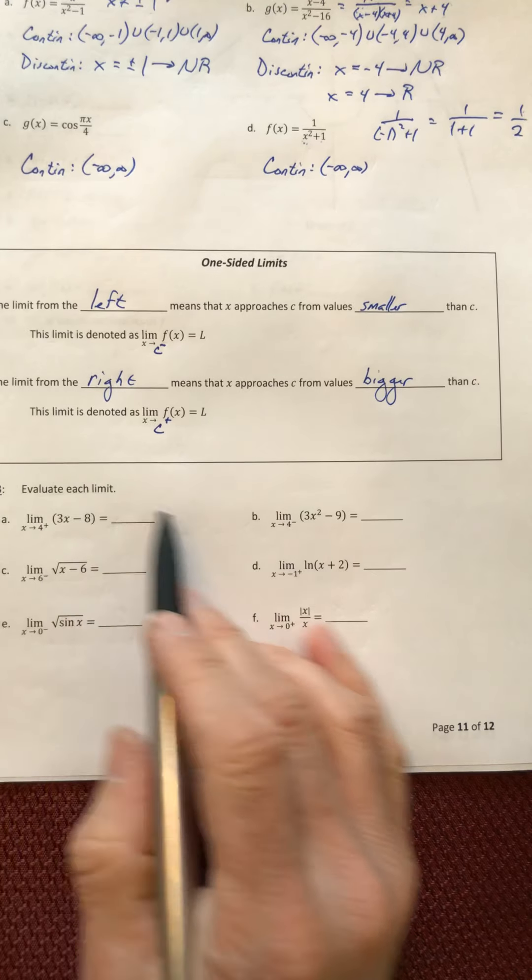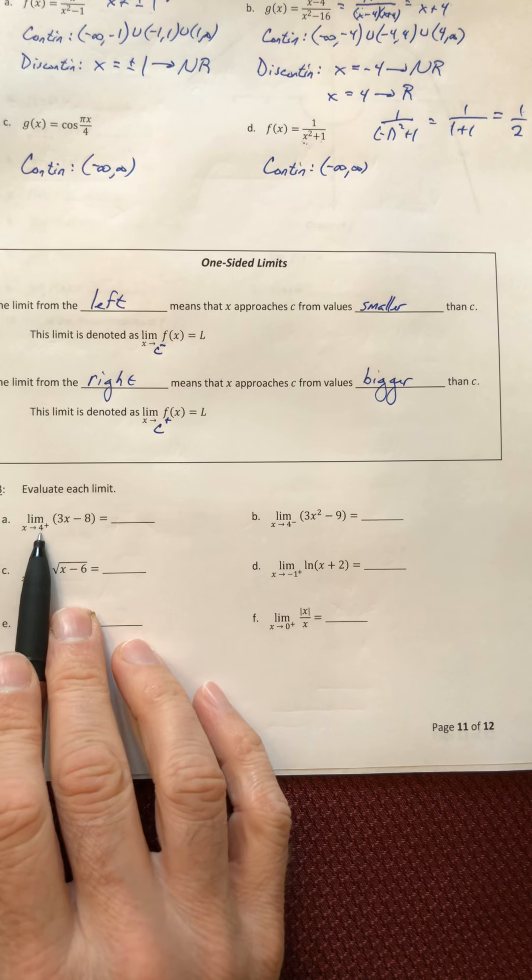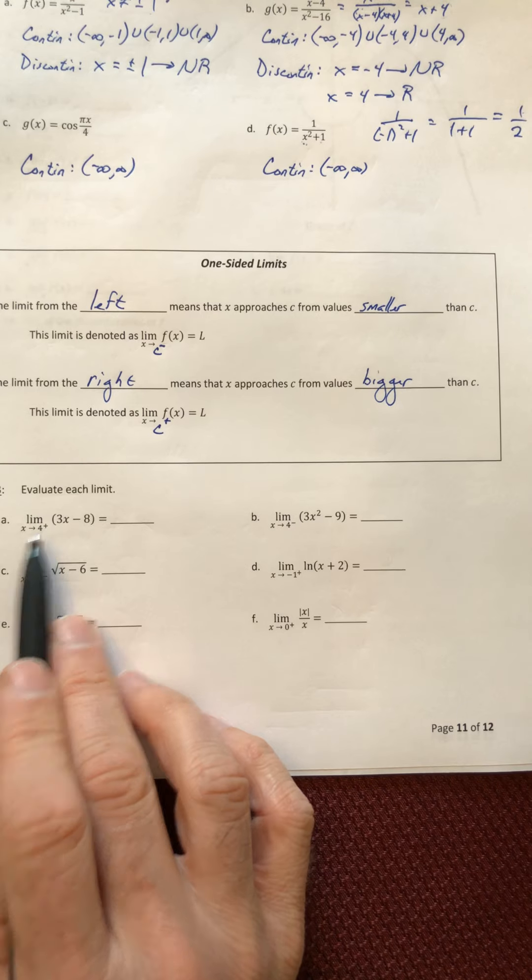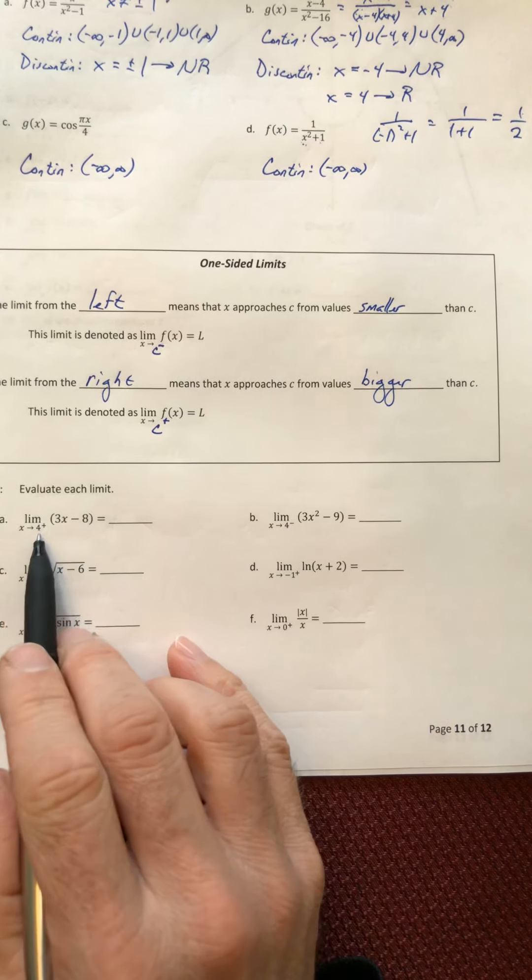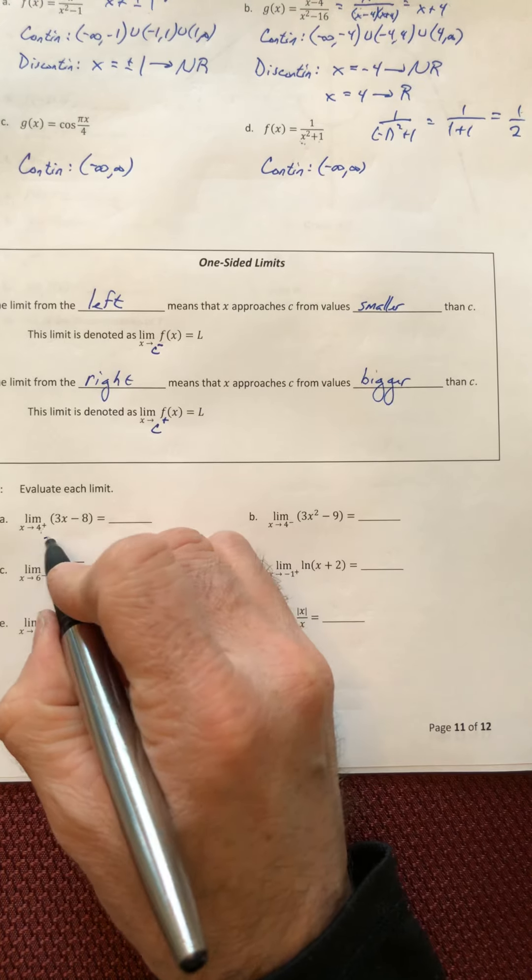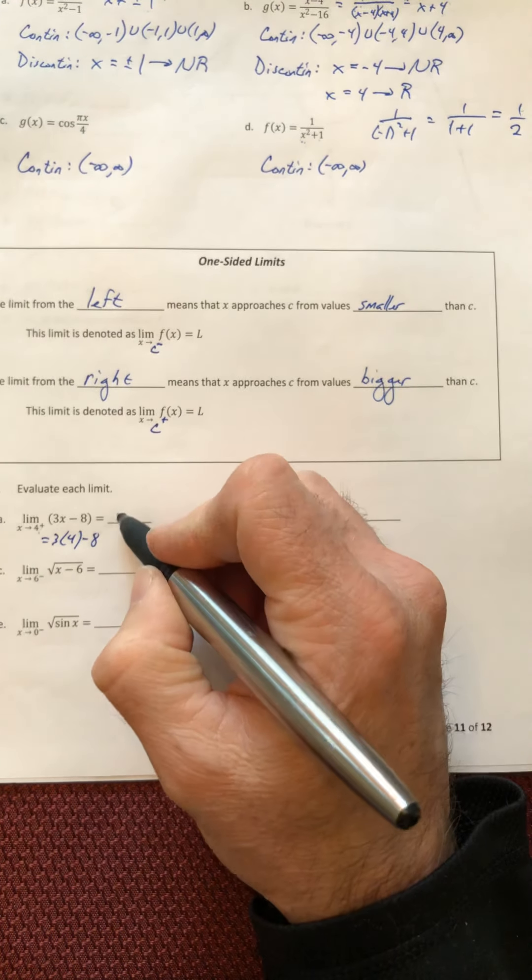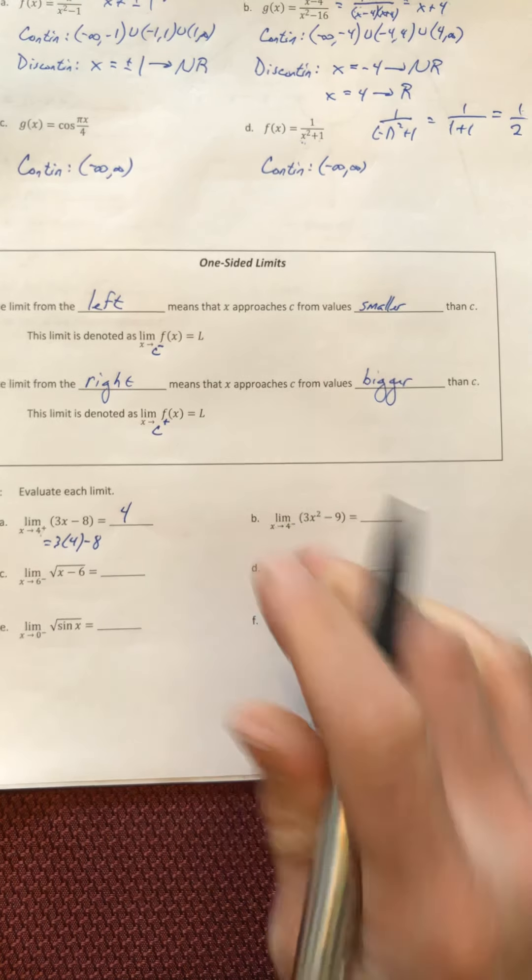So your goal is still the same. You still want to be able to try to plug this number in for x, whether it's a one-sided or two-sided, like you don't care. If you can plug it in, plug it in. So this four can go right in there, and 12 minus eight is four.